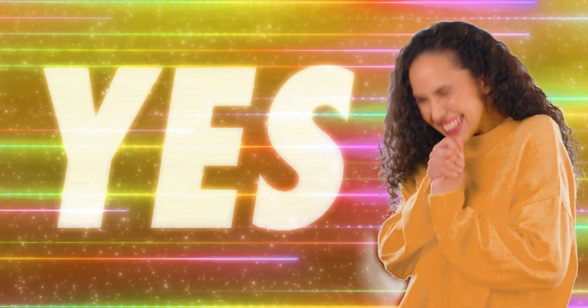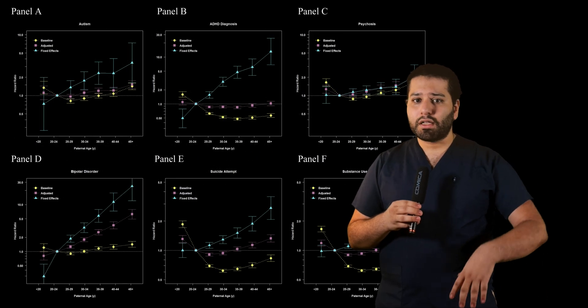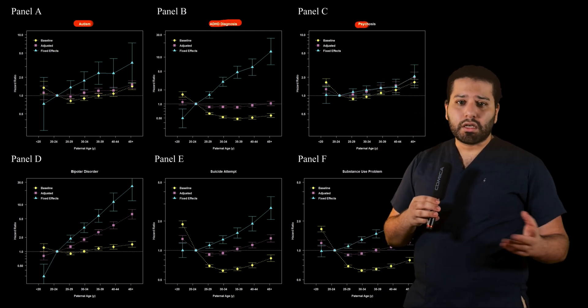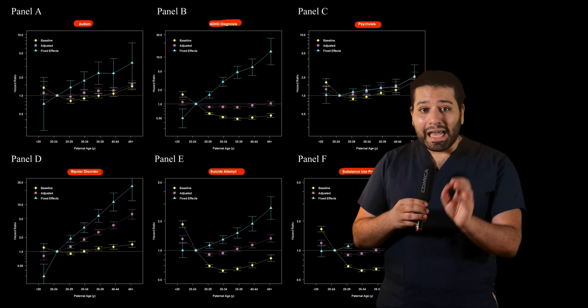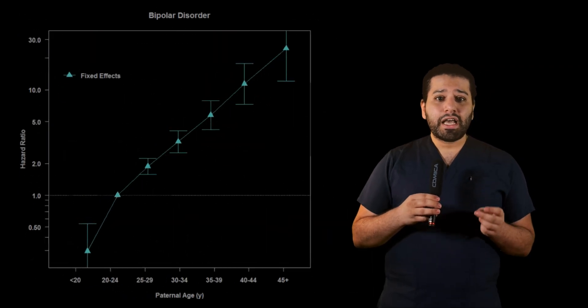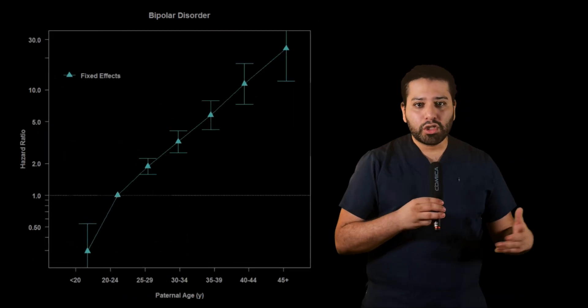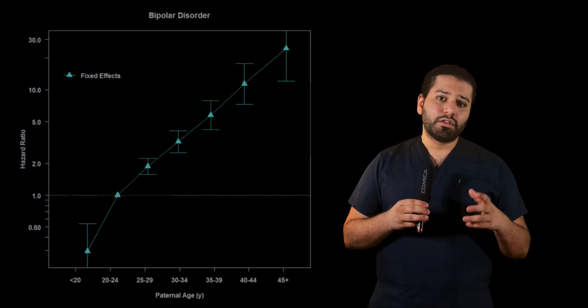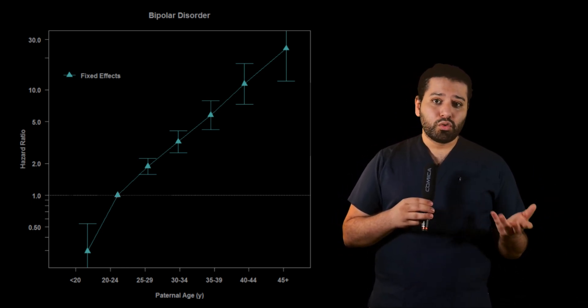It almost certainly can. Advanced paternal age doesn't just affect offspring intelligence. A different study was able to show that older fathers were much more likely to father children who had autism, ADHD, psychosis, substance misuse problems, and bipolar disorder. In fact, in the case of bipolar disorder, fathers aged over 45 were 24 times more likely to have a child who would later on in life be diagnosed with bipolar disorder than fathers aged 20 to 24.